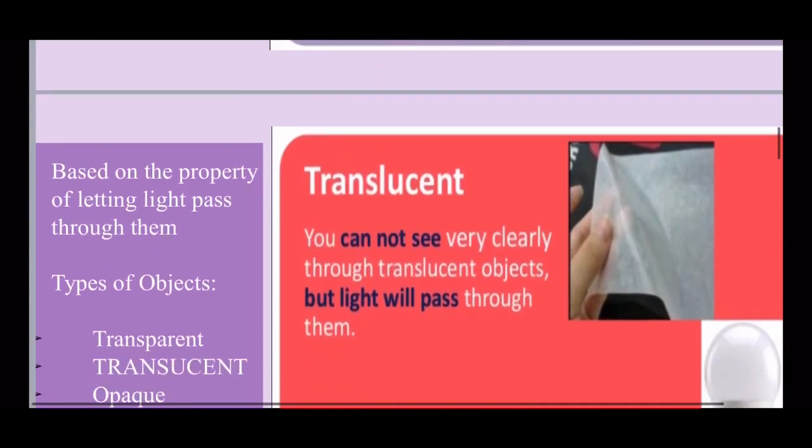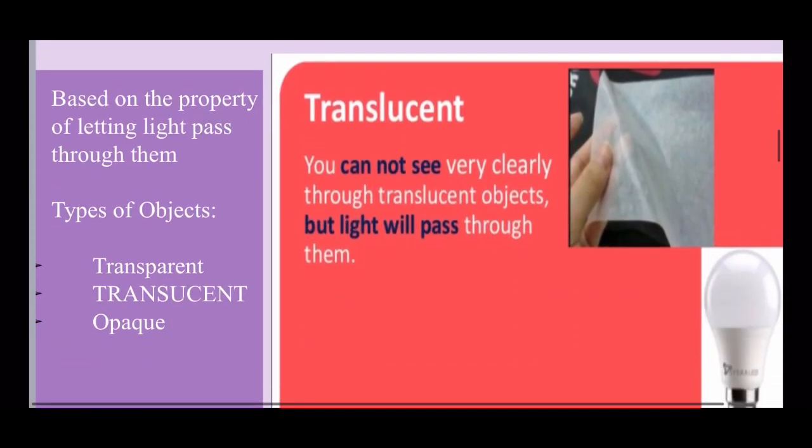The second category is translucent. The objects which partially allow the light to pass through them are called translucent objects. For example, muddy water, tissue paper, oiled paper, cloud, fog, butter paper, and frosted glass.